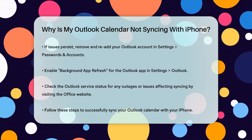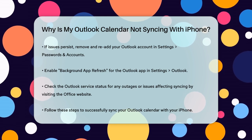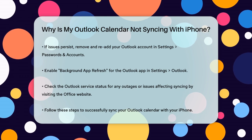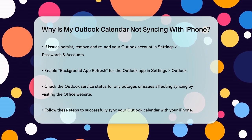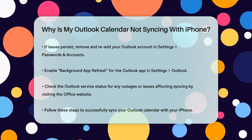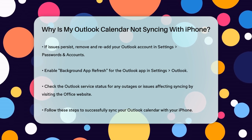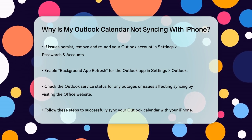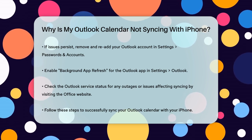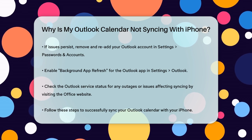Finally, check the Outlook service status to see if there are any outages or issues that might be affecting the syncing process. You can do this by visiting the Office website and checking the service status. By following these steps, you should be able to resolve the issue and get your Outlook calendar syncing with your iPhone again.